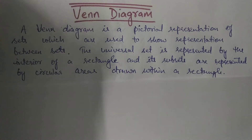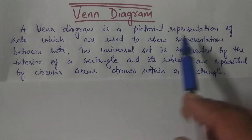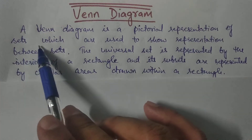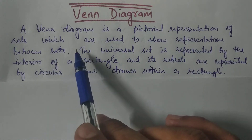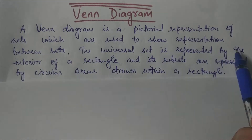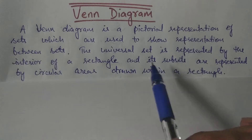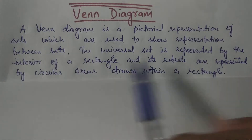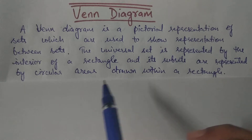Hello friends, welcome back. In this tutorial we will study about Venn diagrams. A Venn diagram is a pictorial representation of sets which are used to show representation between sets. In a Venn diagram, the universal set is represented by the interior of a rectangle, and its subsets are represented by circular areas drawn within the rectangle.